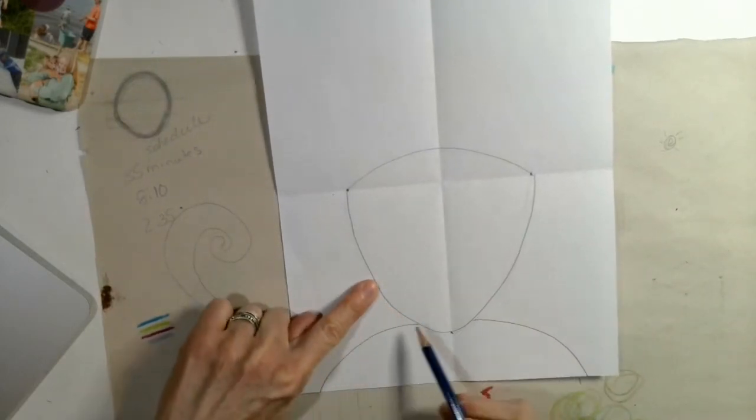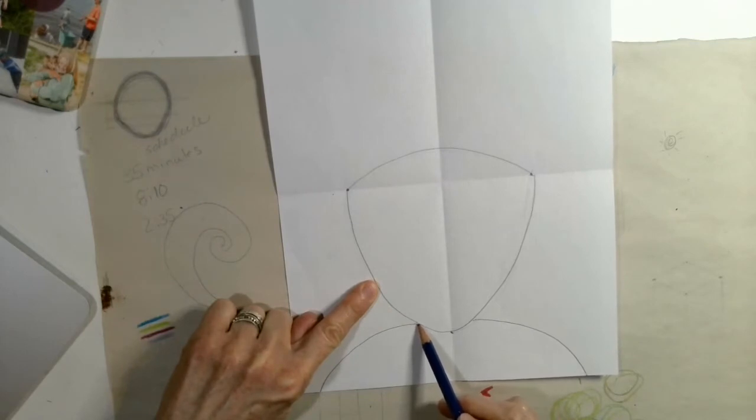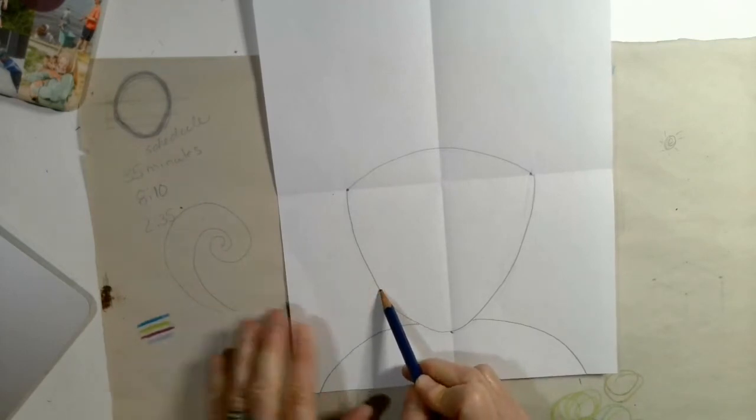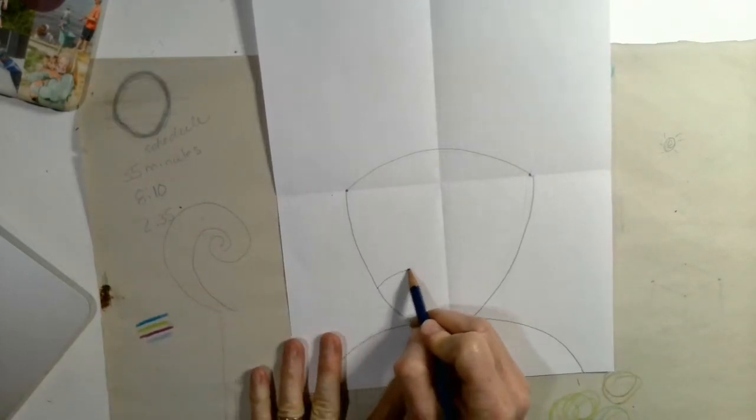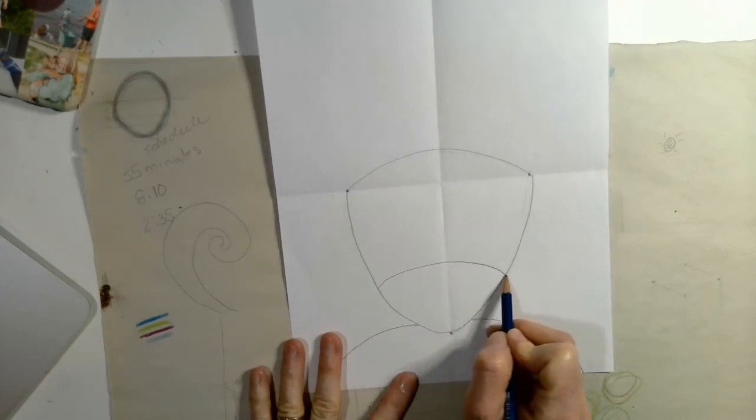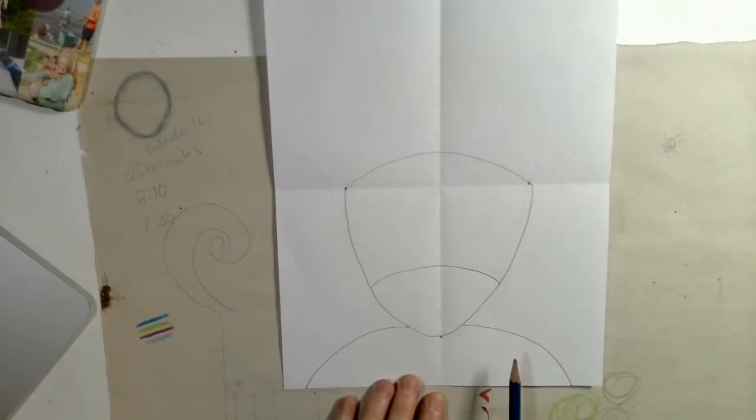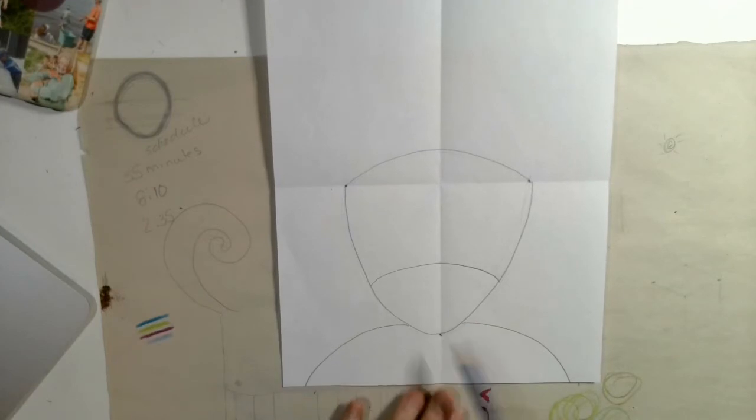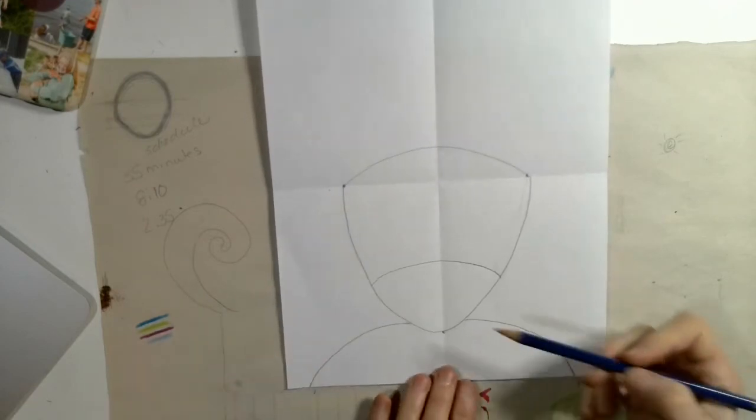So now we're going to go up on this curved line. We don't want to be down here. We want to go up a little ways and we're going to make another curved line. Like a frown. So now let's do our next step.